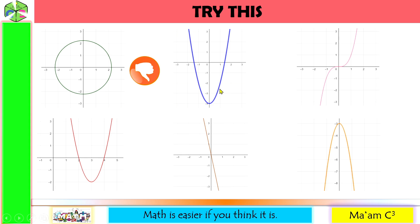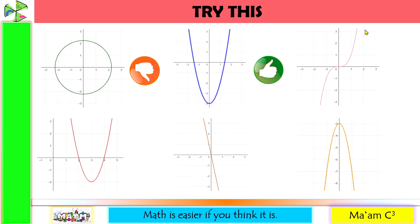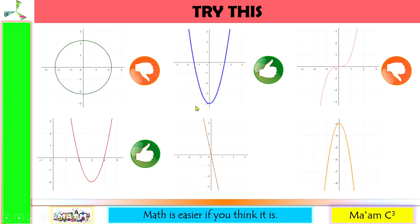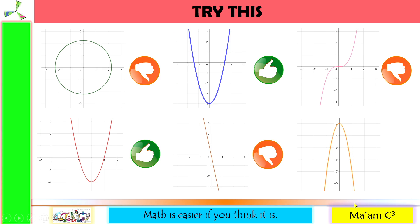This is a parabola that opens upward — thumbs up. The next one is a cubic function, not a parabola — thumbs down. The following is a parabola that opens upward — thumbs up. And this is a line, not a parabola — thumbs down.